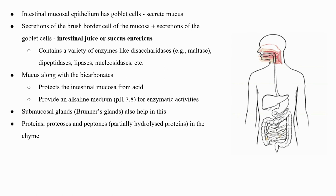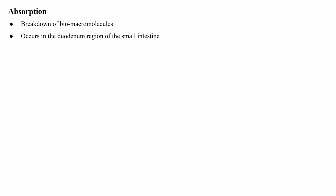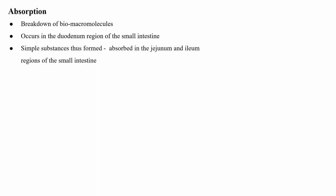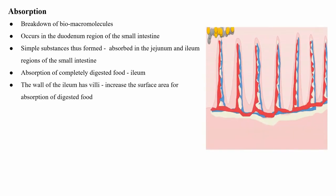Proteins, proteases, and peptones — which are partially hydrolyzed proteins in the chyme — reach the intestine and are acted upon by the proteolytic enzymes of pancreatic juice. The breakdown of biomacromolecules occurs in the duodenum region of the small intestine. The simple substances thus formed are absorbed in the jejunum and ileum regions of the small intestine.